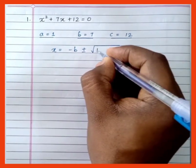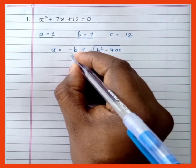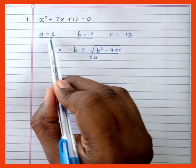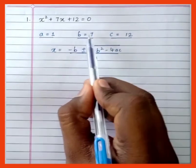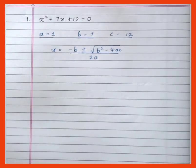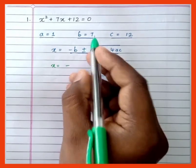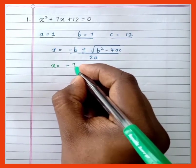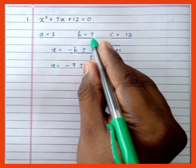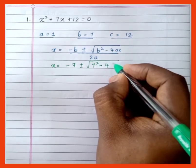The next step is to write the quadratic formula: x = (-b ± √(b² - 4ac)) / 2a. Now substitute the values of a, b, and c into the formula. The value of b is 7, so we get: x = (-7 ± √(7² - 4 × 1 × 12)) / (2 × 1).